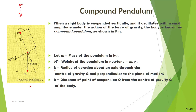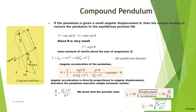If the angular displacement is theta, mg can be resolved into two components: mg cos theta and mg sin theta. The restoring torque when the compound pendulum is given a small angular displacement theta is mg sin theta × h. Since theta is very small, sin theta ≈ theta, so the restoring torque becomes mgh·theta.